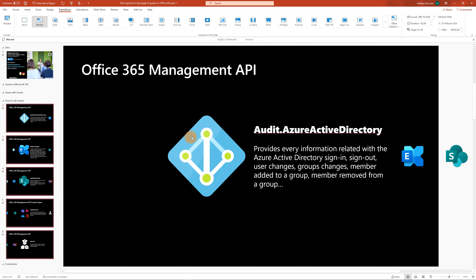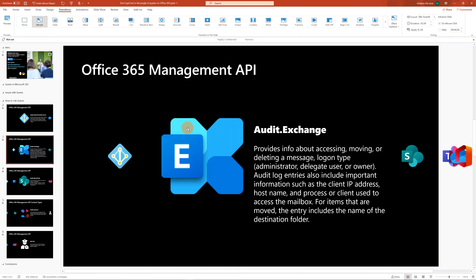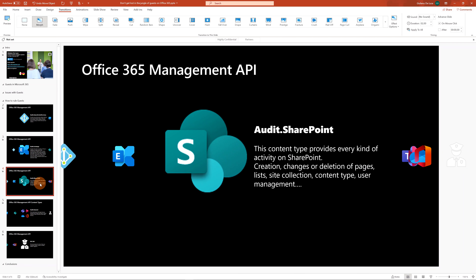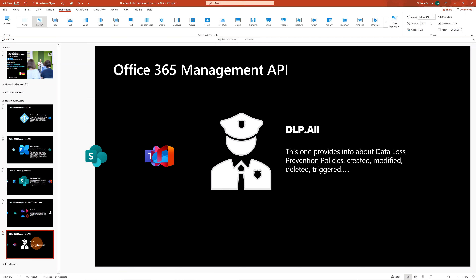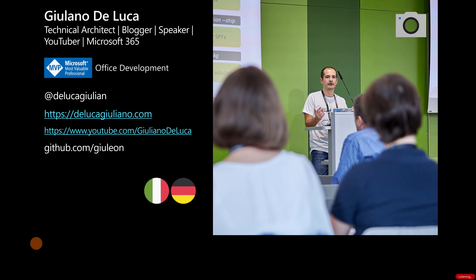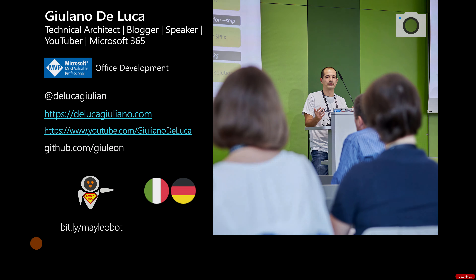For all these slides I applied the Morph transition. My goal for this presentation was to give the feeling that I was talking about different topics. I have several images: this one was centered in the middle with text on the right. In the next slide we can see a smooth transition where the first image becomes smaller and the second takes the stage becoming bigger, with the text on the right changing accordingly, and the same for the third slide and so on.